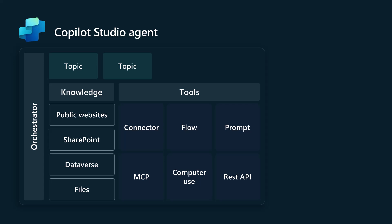With these new additions, we get the ability to now add agent capabilities to our orchestration. Think of it as making sub-agent capabilities inside of your actual Copilot Studio agent or solution.